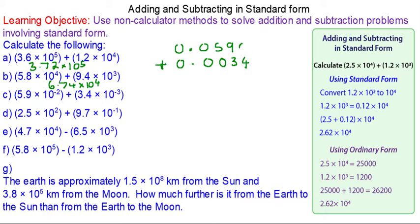We'll put a 0 in the placeholder and add them together: 4, 12, carry over 1. So it is 0.0624.